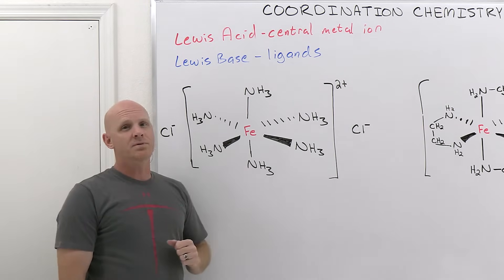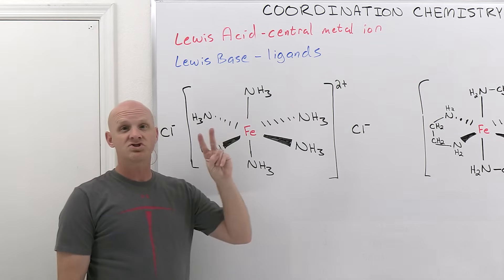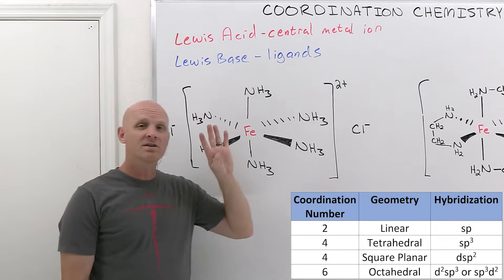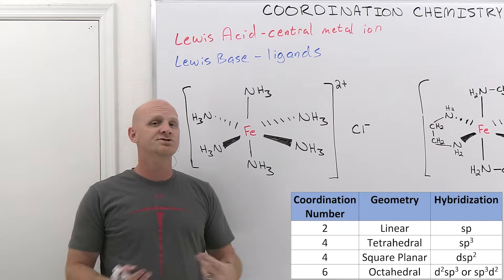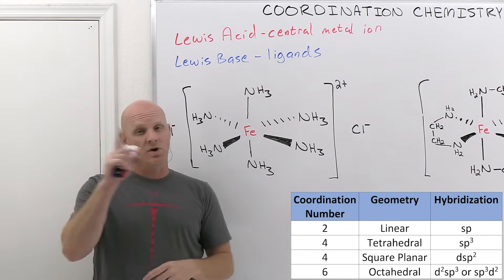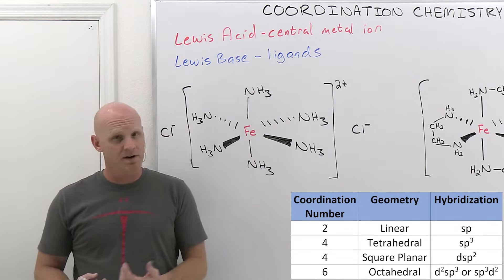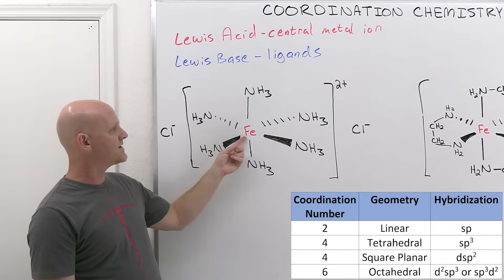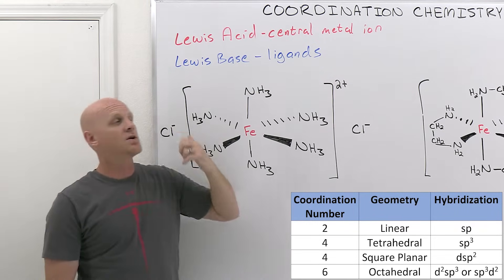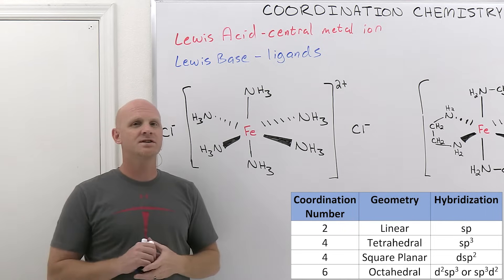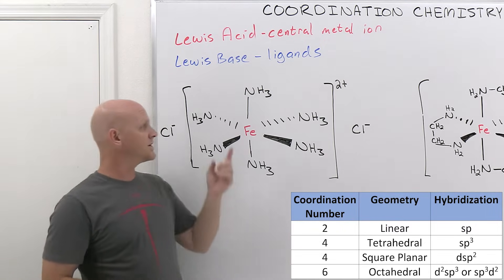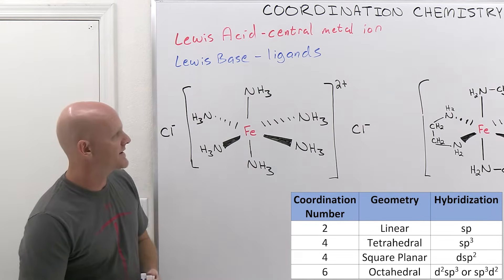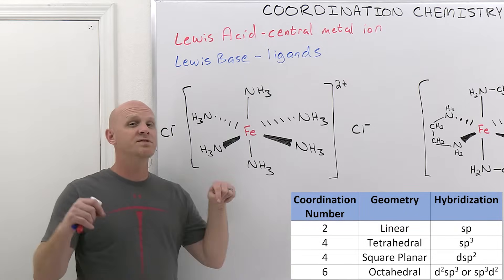We're going to deal with three different sets of numbers of bonds coming off that central metal ion. Two bonds coming off it would be 180 degrees apart — we'd call it linear. Four bonds gives two different geometries: square planar, where they're all in a single plane 90 degrees apart, or tetrahedral, a three-dimensional structure where they're 109.5 degrees apart. And when the central metal ion is making six bonds, that's going to be octahedral — adjacent ones are 90 degrees apart, opposite ones are 180 degrees apart — the same octahedral shape we've dealt with in molecular geometry.